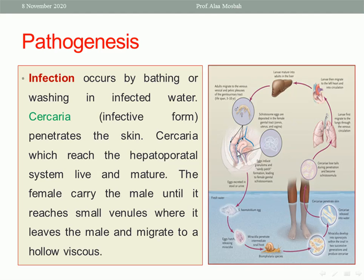When reaching the small venules, the female leaves the male and continues the journey alone to reach organs like the rectum and urinary bladder. Through the circulation it can also reach other organs, and when it reaches the organs it produces eggs which cause inflammation and pathology. The eggs then pass through the stool or urine, contaminate the water, reach the snail again, and continue the cycle. While the cercariae are penetrating the skin, they may cause urticaria, skin rash, cough, fever, or may pass unnoticed — this is the acute presentation — or it may be discovered later with chronic complications.